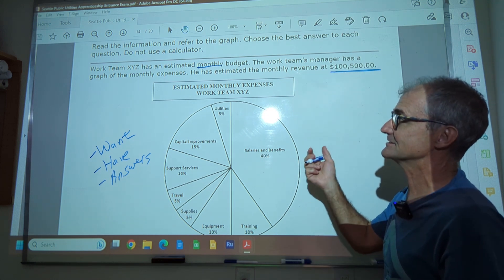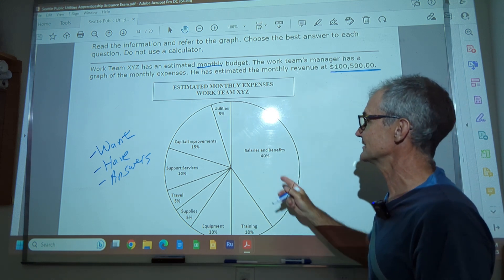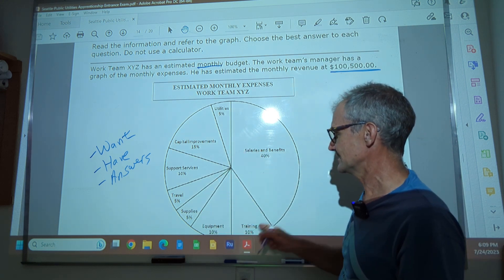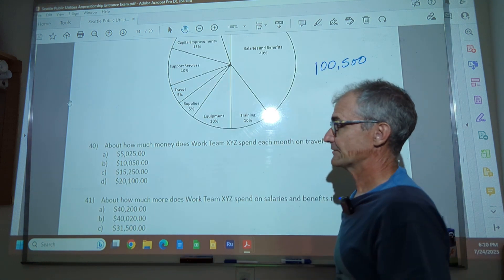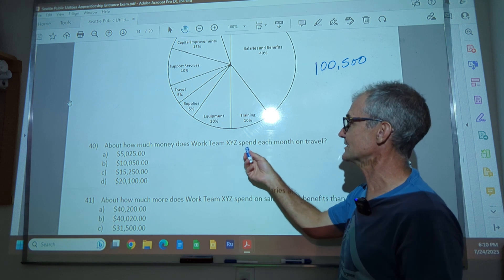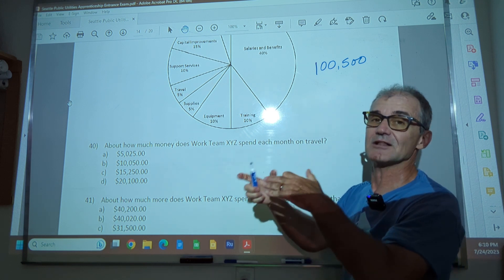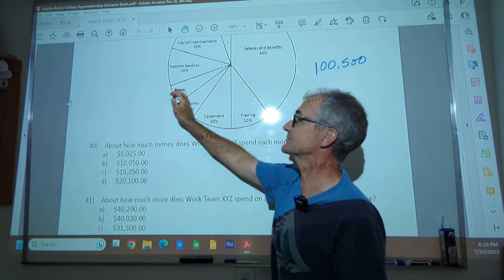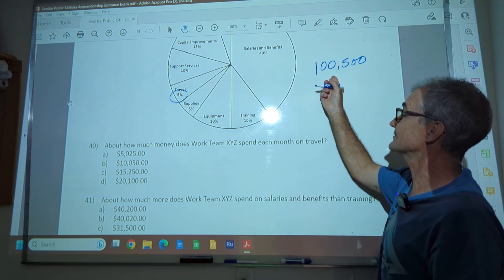So $500 is just really very little compared to the $100,000. So it's pretty close to $100,000. 40%, $5,000, $15,000, $10,000. And they all look like they add up to $100,000. Okay, the first problem right here. How much money does work team XYZ spend each month on travel? So what do we want? The dollar amount on travel. I go up right here. I have this 5%. The total budget, remember, is $100,500.